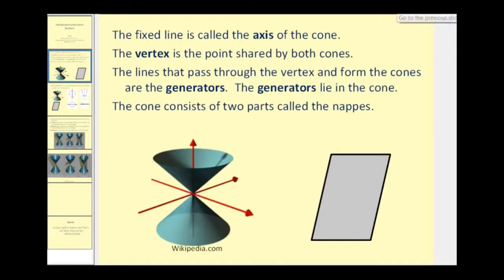If we start with a double cone as we see here in green, the fixed line is called the axis of the cone, and that would be this line here. Next, the vertex is the point shared by both cones, and that point would be right here.